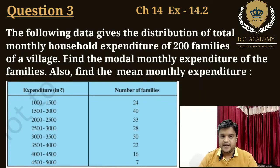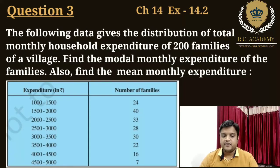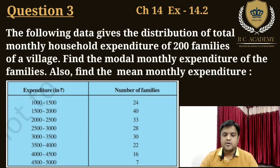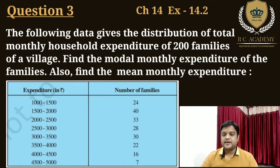Expenditure ranges are: 1000 to 1500, 1500 to 2000, 2000 to 2500, 2500 to 3000, 3000 to 3500, 3500 to 4000, 4000 to 4500, 4500 to 5000. Number of families is 24, 40, 33, 28, 30, 22, 16, and 7.